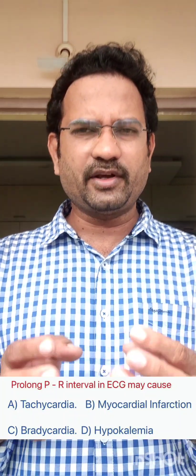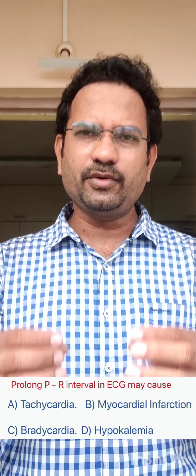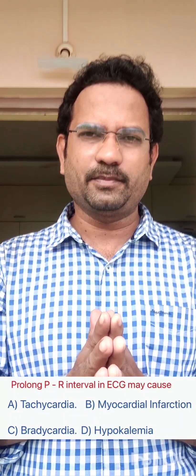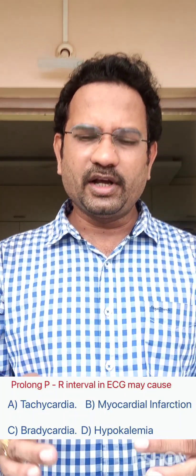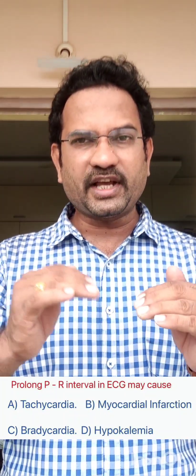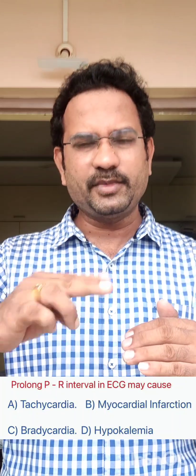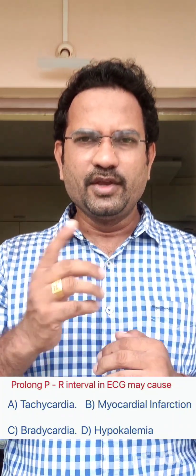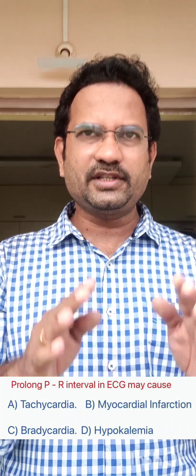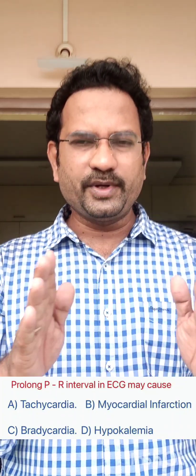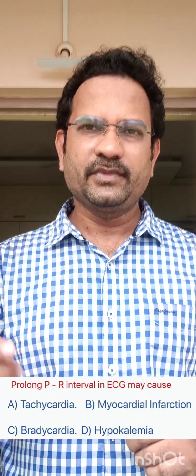Myocardial infarction is death of myocardial tissue due to blockade of blood supply. Hypokalemia means reduced potassium level — kalium means potassium. So the answer for prolonged PR interval causes is bradycardia.